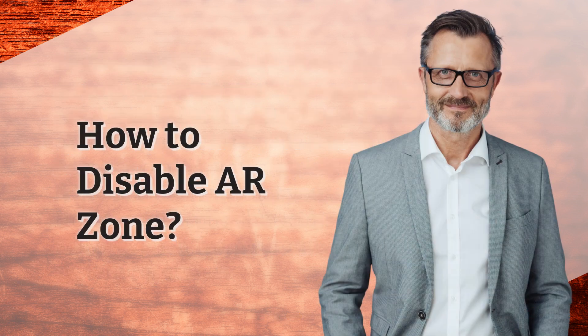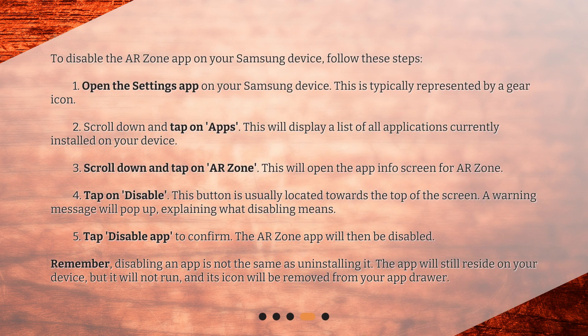How to disable ARZone? To disable the ARZone app on your Samsung device, follow these steps. Step 1: Open the Settings app on your Samsung device. This is typically represented by a gear icon. Step 2: Scroll down and tap on Apps. This will display a list of all applications currently installed on your device. Step 3: Scroll down and tap on ARZone. This will open the app info screen for ARZone.